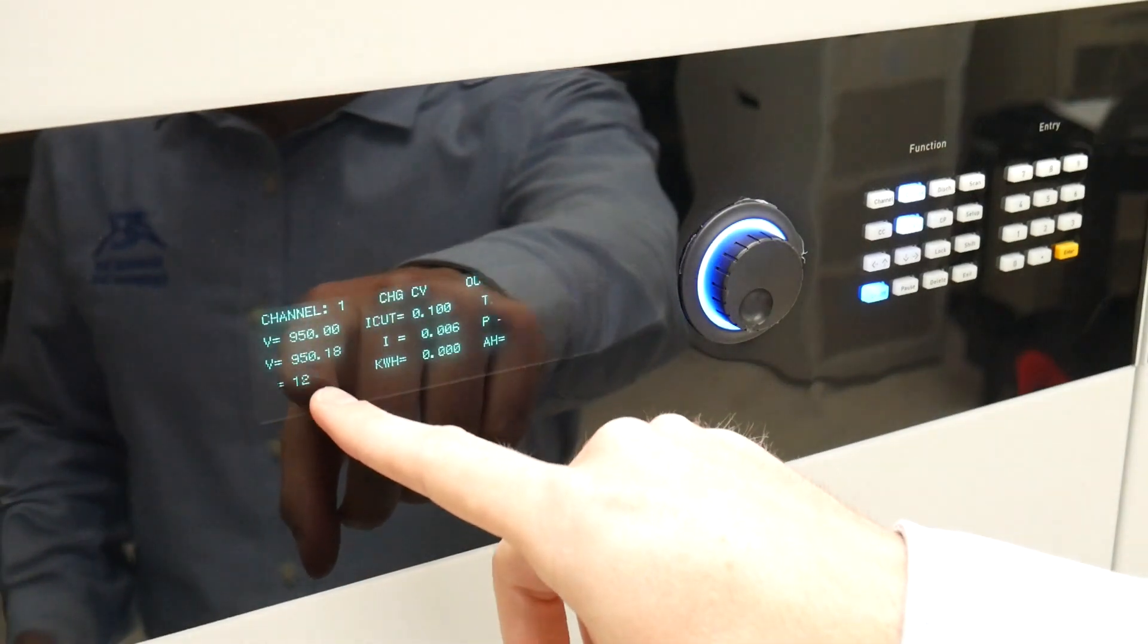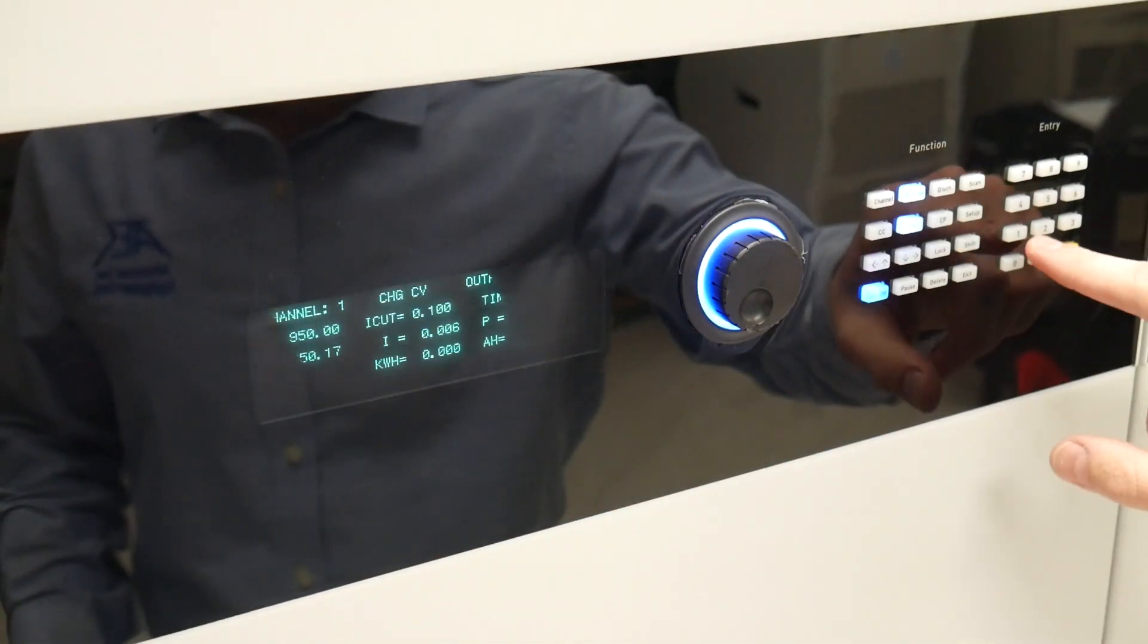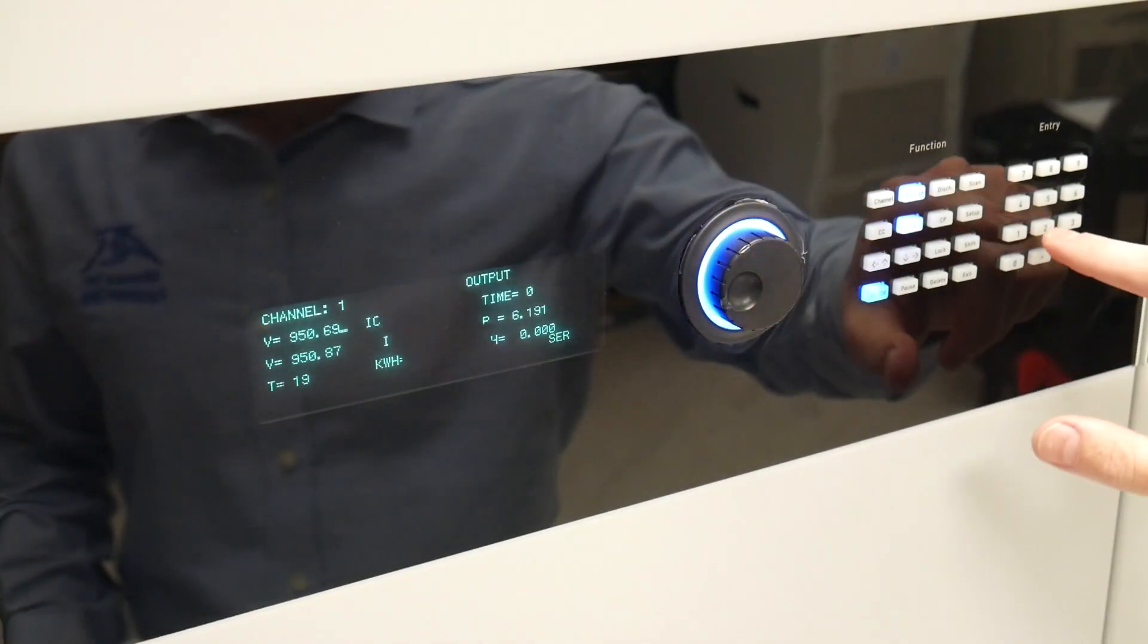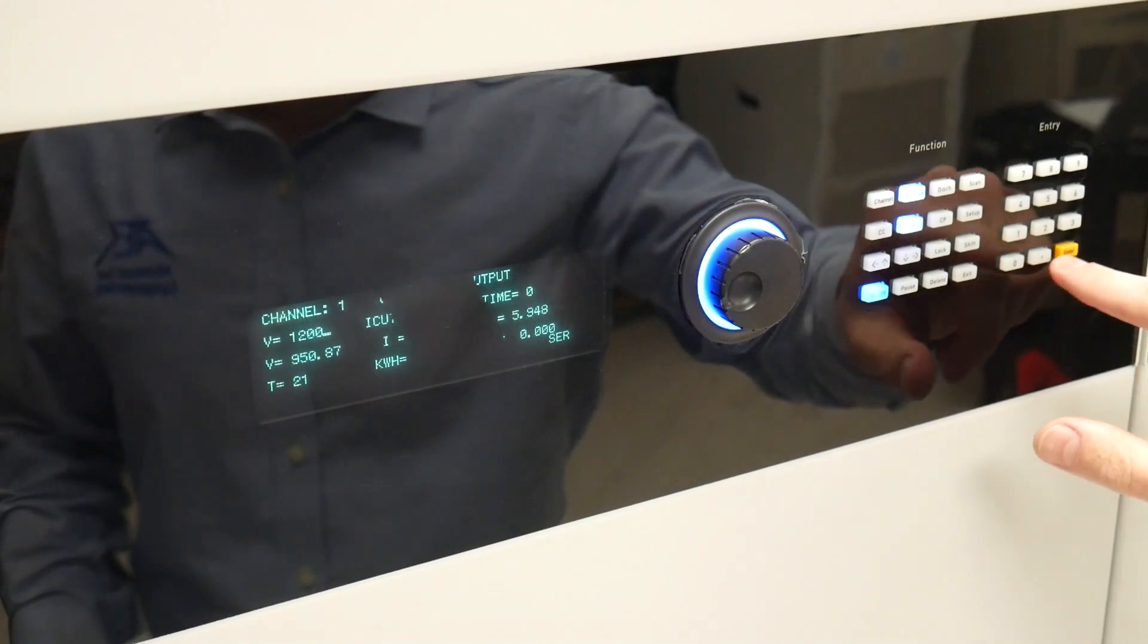Here we can change the charge settings on the go with the wheel, or by entering a new value such as 1200 volts. No current or power is present as we currently have an open circuit on the output.